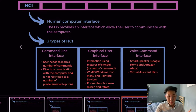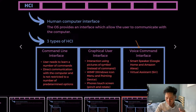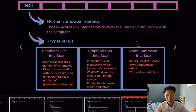The more recent type is the voice command interface, in which you communicate with your computer by saying something to it. For instance, on iPhone we have Siri, and on Google it's called Google Assistant. These different methods — command-line interface, graphical user interface, and voice command — are all provided by the OS to help us communicate with the computer.